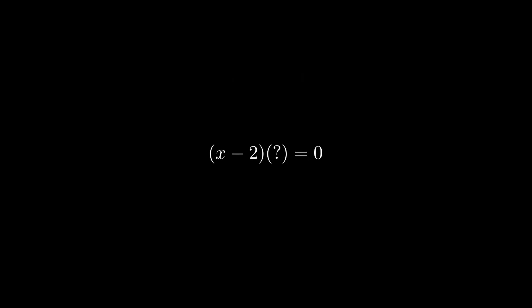Well, we know the second bracket must be a quadratic that multiplies with x minus 2 to give x cubed minus 8. We can expand the brackets and collect the like terms.